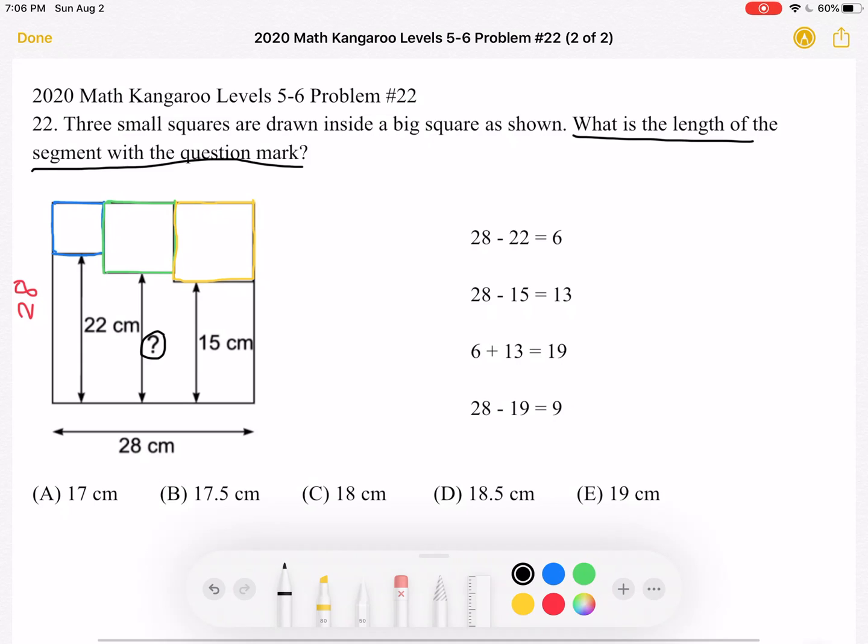Well, we can see that if we find the side length of the green square, we will also be finding the question mark.